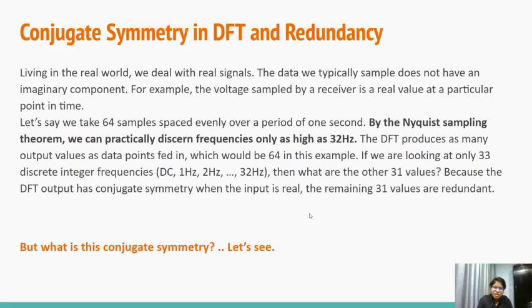The DFT produces as many output values as data points fed in, which would be 64 in this example. If we are looking at only 33 discrete integer frequencies, that is DC, 1 hertz, 2 hertz, up to 32 hertz, then what are the other 31 values? Because the DFT output has a conjugate symmetry when the input is real, the remaining 31 values are redundant. And what is this conjugate symmetry? Let's see.